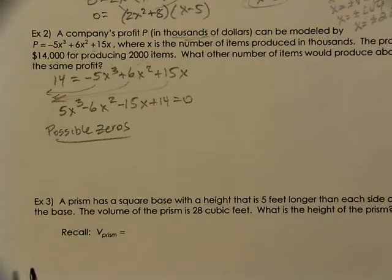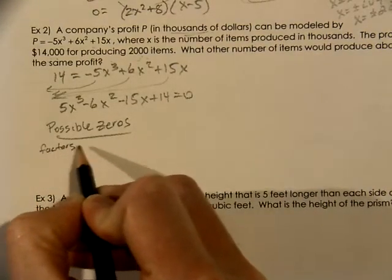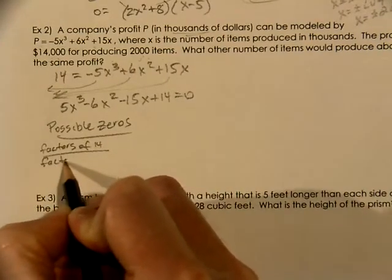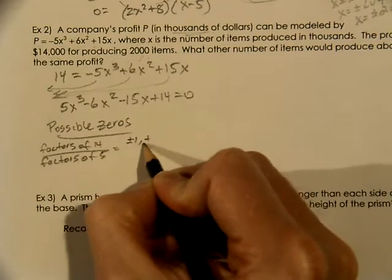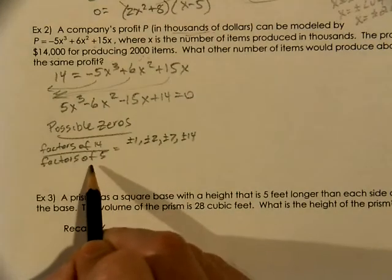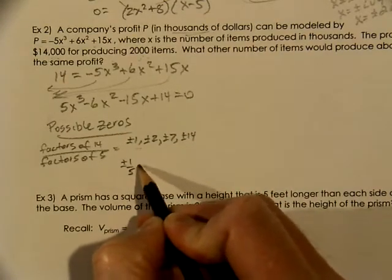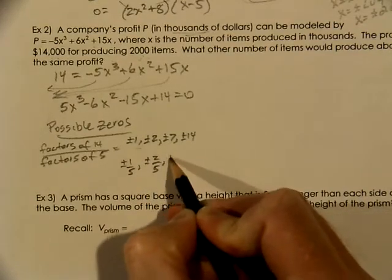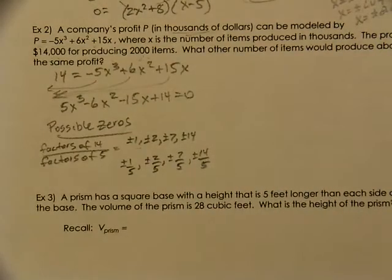We can use possible zeros to help us limit all the possibilities that there would be. We take the factors of 14 divided by the factors of 5. The factors of 14 are plus or minus 1, plus or minus 2, plus or minus 7, and plus or minus 14. So the factors of 5 are 1 and also 5. So we have to divide everything by 5. When we divide everything by 1, the problems didn't change. But when I'm dividing by 5, those would be all the decimal versions of where these zeros would be mathematically possible. So these are our possible zeros.